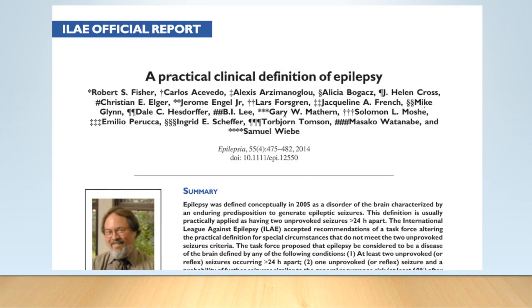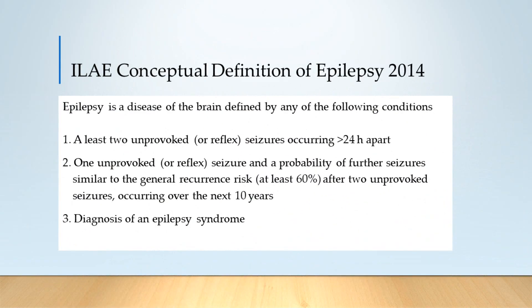In my original video, I used their definitions of recurrence risks, but I missed out the top line of their definition, which is: epilepsy is a disease of the brain defined by any of the following conditions. Clearly, that's quite a shift from having previously described epilepsy as being a disorder of the brain characterised by an enduring predisposition. The first point of real debate is whether we should be seeing epilepsy as a disease or as a disorder.